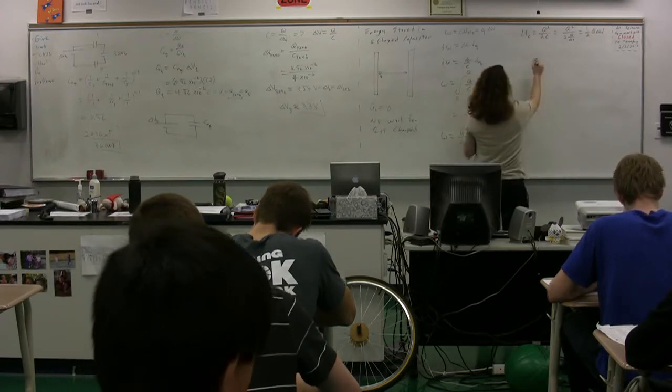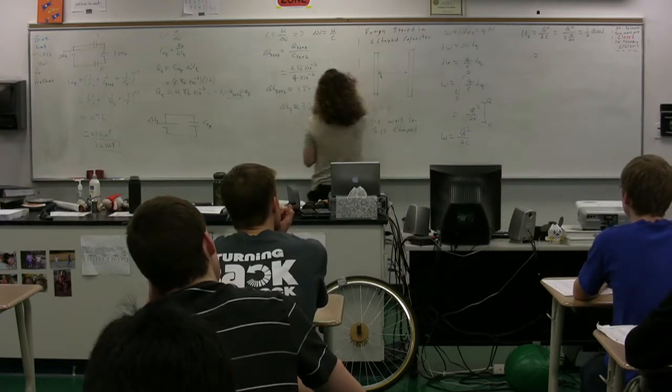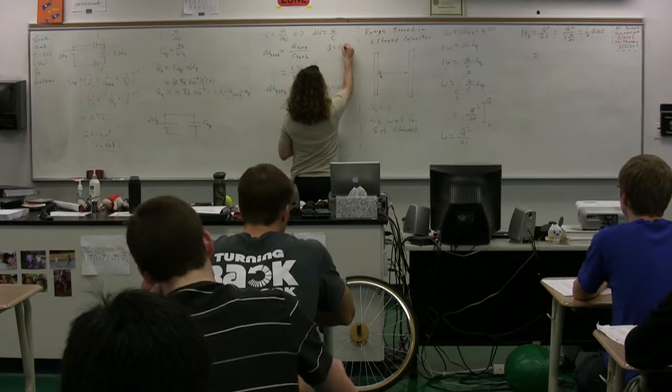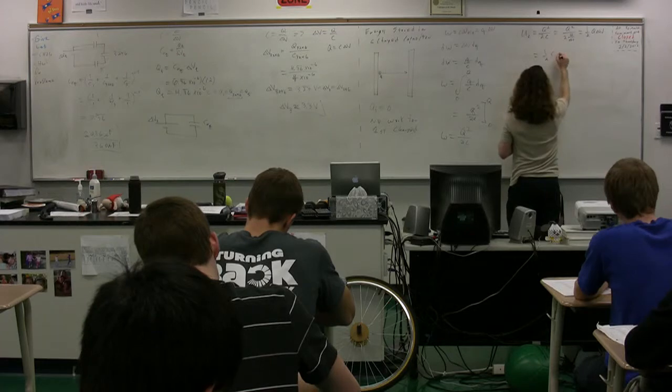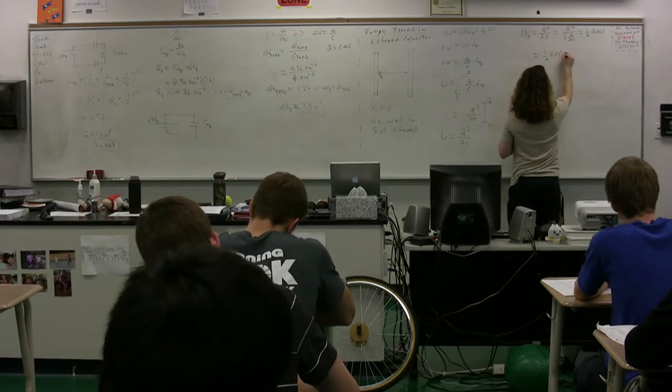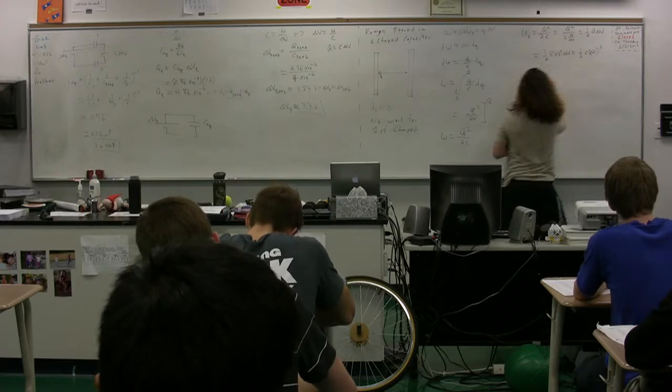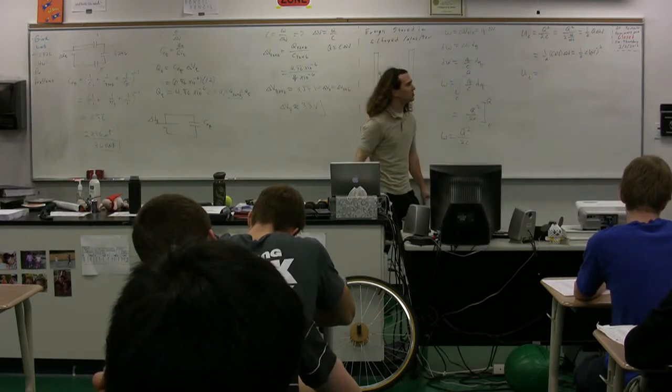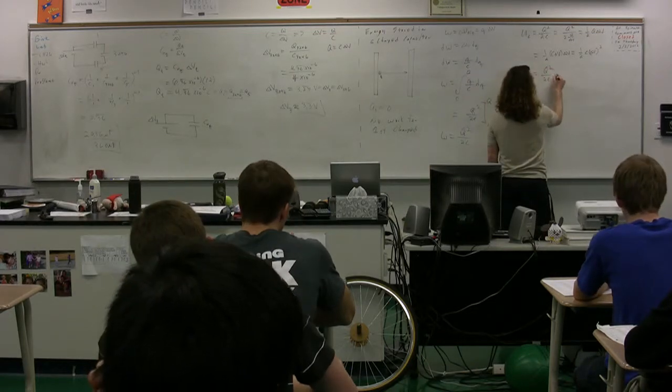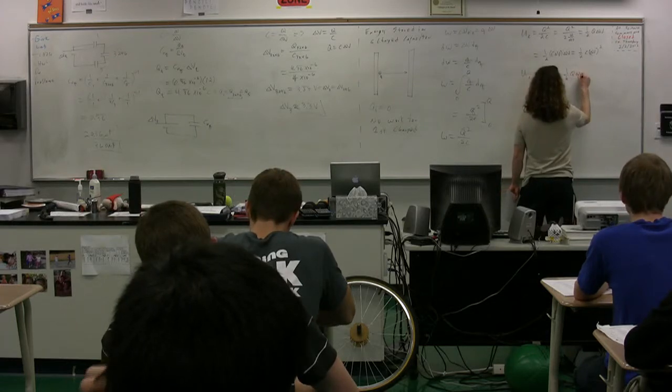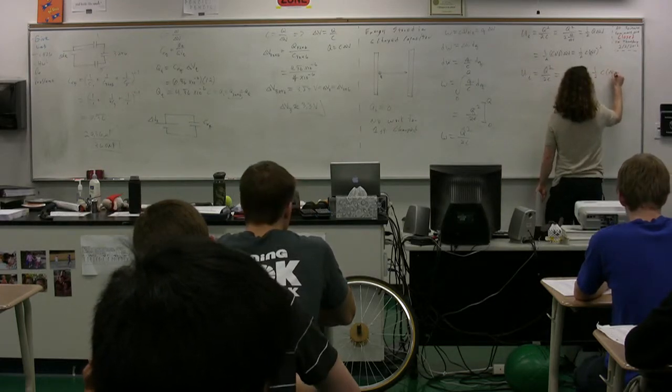We can also substitute in for the charge here, because we know charge is equal to capacitance times electric potential difference. We have 1 half times the capacitance times the electric potential difference, times the electric potential difference, or 1 half C times the electric potential difference squared. So, we actually have three different equations for this energy stored on a capacitor. One is q squared over 2C. One is 1 half q times the electric potential difference. And the other one is 1 half times the capacitance times the electric potential difference squared.